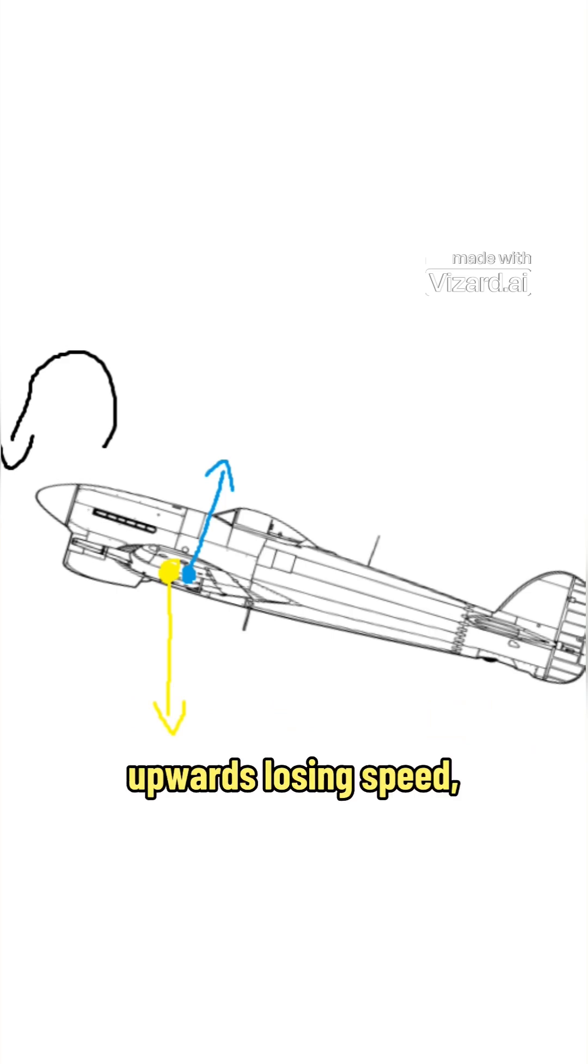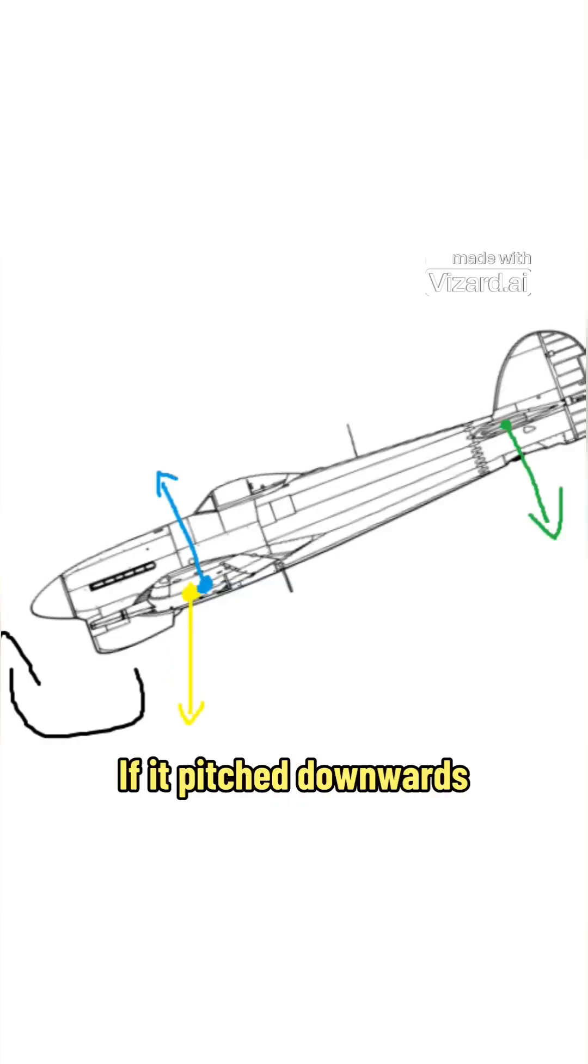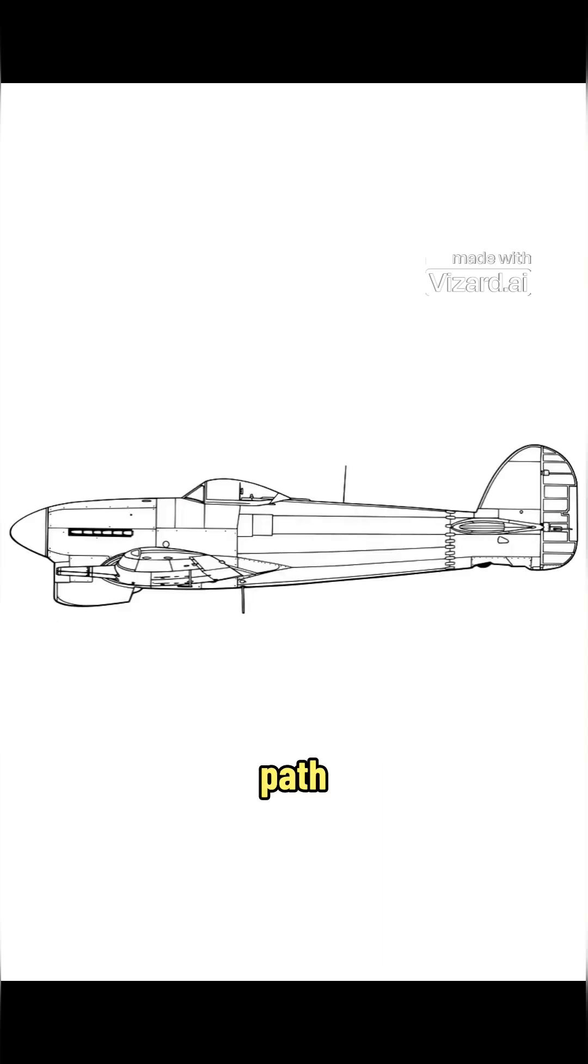So if the aircraft pitched upwards, losing speed, the tail would lose its lift and the aircraft would begin to pitch down again because of the forward center of gravity. If it pitched downwards, gaining speed, the tail would increase lift and the aircraft would pitch upwards again to a level flight path.